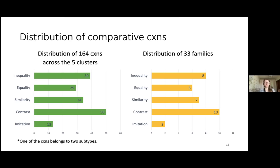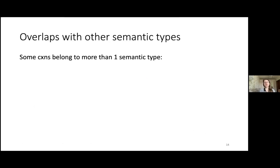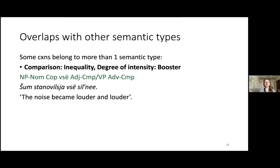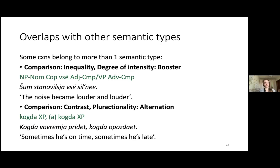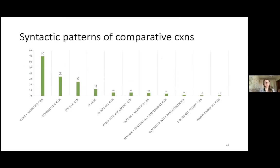Some constructions may belong to more than one semantic type. In addition to comparison, a construction may be characterized by a particular degree of intensity — for instance, 'the noise became louder and louder.' Or, in addition to contrast, a construction may belong to the alternation subtype when two actions alternate between each other: 'Sometimes he's on time, sometimes he's late.' As for the syntactic patterns of comparative constructions, there are many, but the most frequent are head-plus-modifier constructions, connective constructions, and copular constructions.